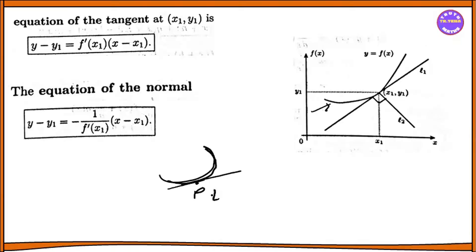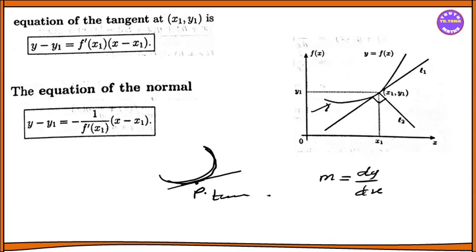This is the gradient. This is the gradient of the gradient. If you cross the slope, you are leaning towards the curve. There is also a distance from the side of x between the slope and the slope.